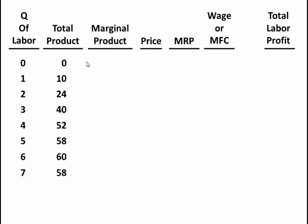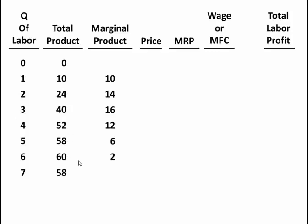The marginal product is the change in the total product divided by the change in the quantity of labor. Since the change in the quantity of labor is one, it's simply the change in total product. When I hire the first worker the marginal product is 10. The second worker adds a marginal product of 14. This continues: 24 to 40 is 16, 40 to 52 is 12, 52 to 58 is 6, 58 to 60 is 2. And if I hire the seventh worker my total product goes down, giving a negative marginal product of minus 2.